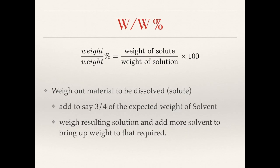The weight-to-weight percentage is possibly the least frequently encountered percentage solution type, but it's also the most frequently misunderstood. A common mistake when making up a weight-to-weight solution is to weigh the solute and then weigh the solvent and combine them. This is incorrect because the percentage is the weight of the solute over the weight of the solution — and we have to remember the solution is the solute and the solvent combined. Typically to prepare a solution of this type we would weigh up the solute and then weigh up maybe three quarters of the expected weight of the solvent and combine the two. More solvent can then always be added to bring up the weight of the solution.